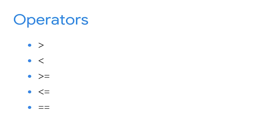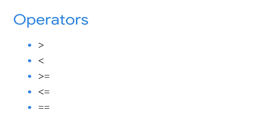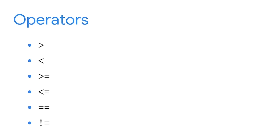The double equals sign is an important operator often used in conditional statements. A double equals evaluates whether two objects match — it assigns a Boolean value of true when they match and false when they don't. There's one more operator we should discuss: an exclamation mark followed by an equal sign represents not equal. This operator evaluates whether two objects are different — assigning true when they don't match and false when they do.